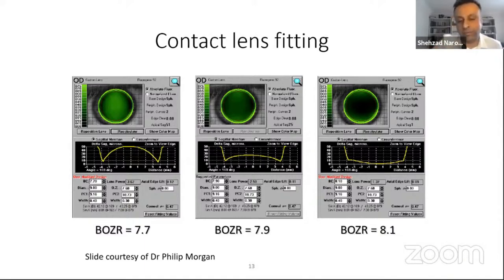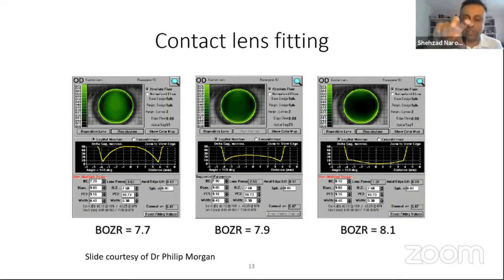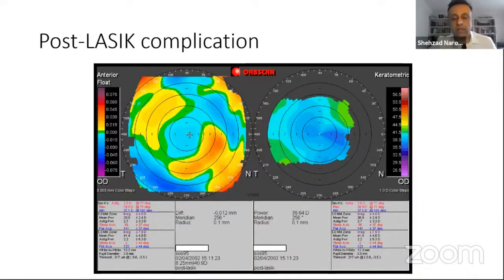Some of the newer topographers will even let you move the lens on the image to simulate lens decentration or what happens during a blink — a very useful feature for fitting planning.